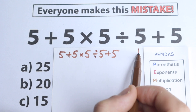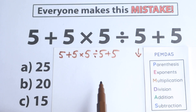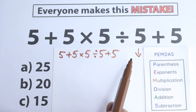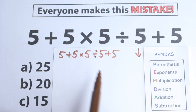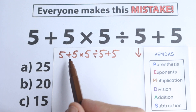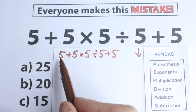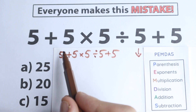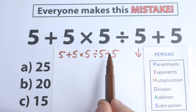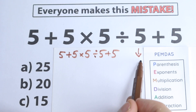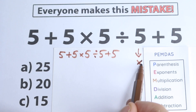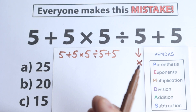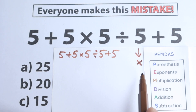PEMDAS works from the top to the bottom. The main thing you need to know is that we start from parentheses — that's the first step. Now we need to scan: where do we have parentheses? I don't see any parentheses, because we don't have any parentheses here. So we just skip this part, which is really great, because with parentheses this question would be more complicated.